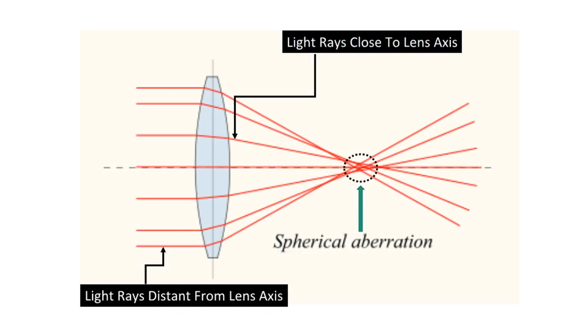You notice that in a spherical lens, light rays distant from the lens axis would focus in a slightly different place than the light rays close to the axis. This manifests itself as a blurring of the image.